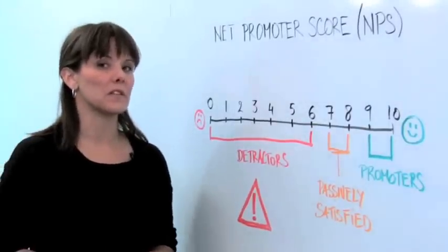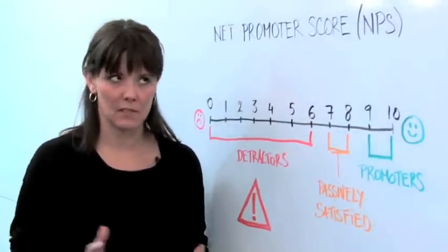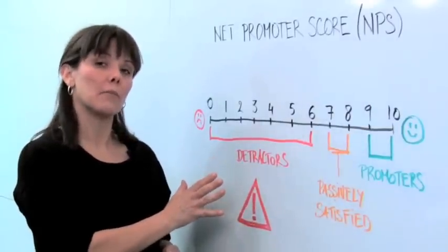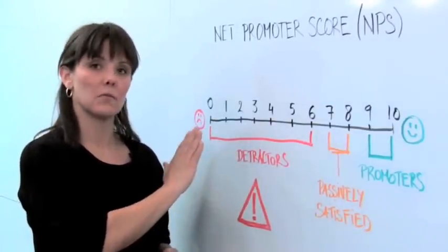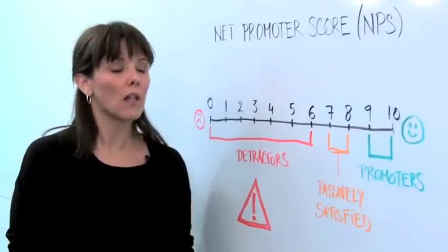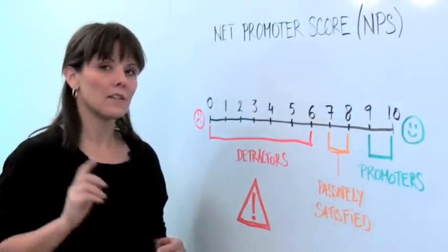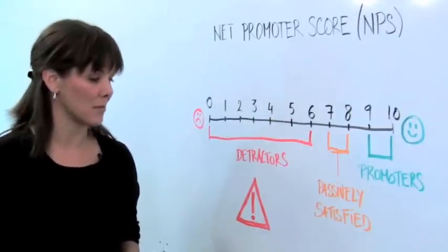So let's get into the Net Promoter Score as an example in the business to business realm. If someone scores your company low on the Net Promoter Score, the zero to six realm, what they're saying is they are not likely to recommend you to their friends or family. So that should pose some kind of an alert for your management.